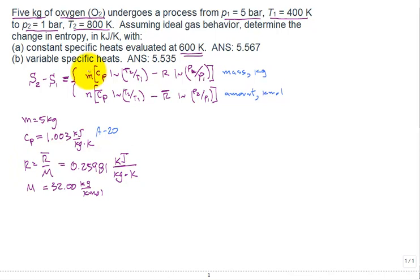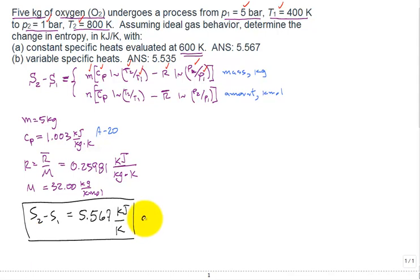We've got the mass, the specific heat, the R. We've got the T2 and the T1, the T2 is right here, the T1 is right there. We've got the P1 and the P2. At this point, I'm just going to say you can plug and chug and calculate that S2 minus S1 comes right in at, for constant specific heats, 5.567 kilojoules per Kelvin. That's the answer for part A.